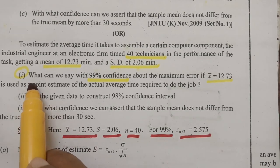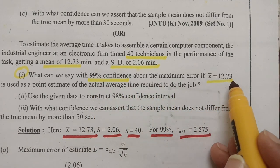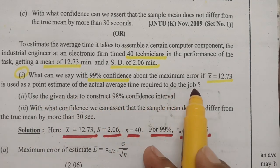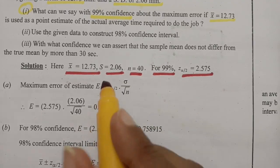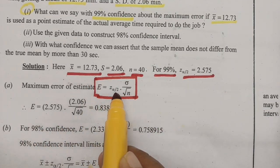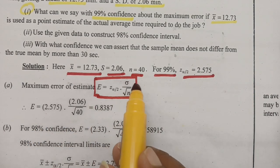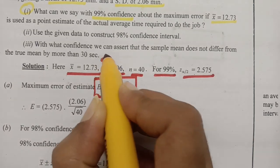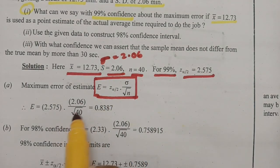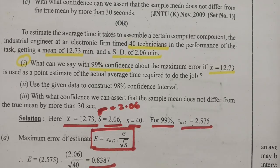Maximum error is asked. The maximum error is equal to Z alpha by 2 · sigma / root n. Substituting: Z alpha by 2 is 2.575, and sigma is nothing but the standard deviation, which is 2.06, divided by root n, that is root 40. The value here is 0.8387.